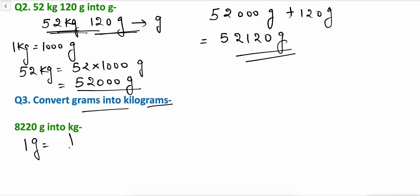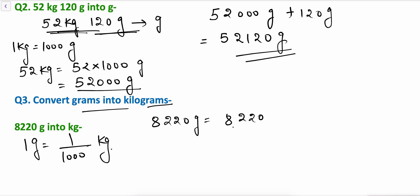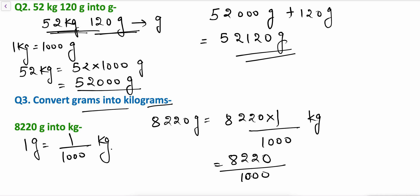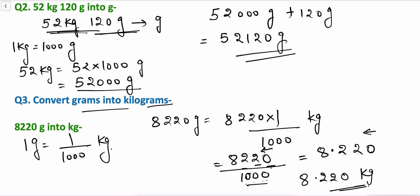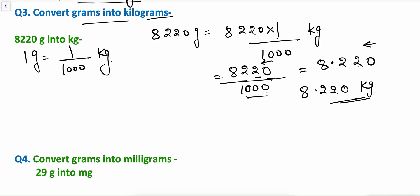Now convert grams into kilograms. 1 gram equals 1/1000 of a kilogram, so 8220 grams will be 8220 divided by 1000 kg. No need for detailed division — just place a decimal point after 3 digits from the right. So the answer is 8.220 kilograms, which is 8 kilograms and 220 grams.